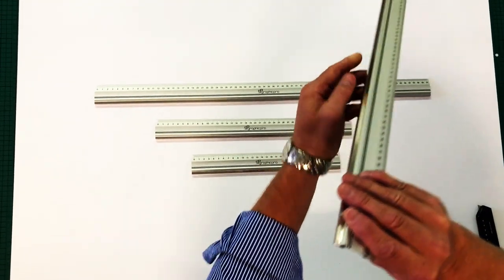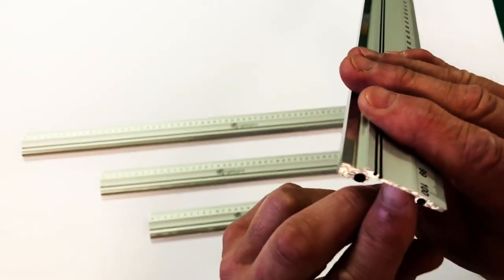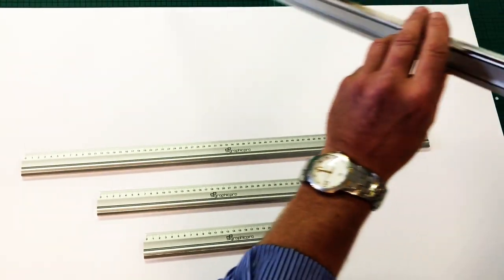These also have a great feature where they've got a rubber anti-slip device going all the way through the back of the ruler.